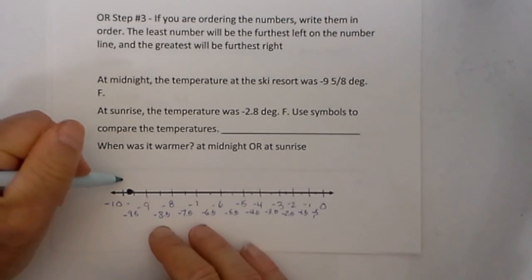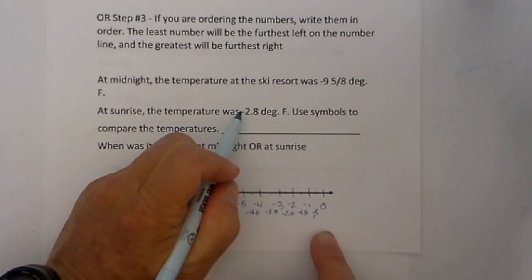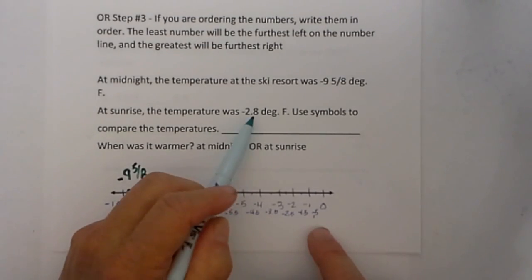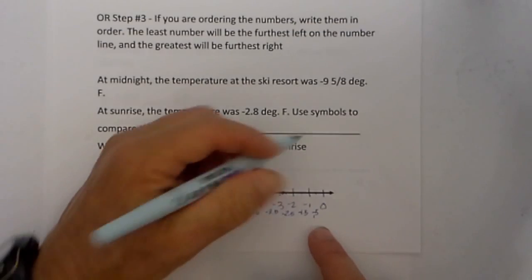So that is negative 9 and 5 eighths. And then I will plot negative 2.8. And 2.8 is almost 3. Here is halfway, so negative 2.8 will be here.